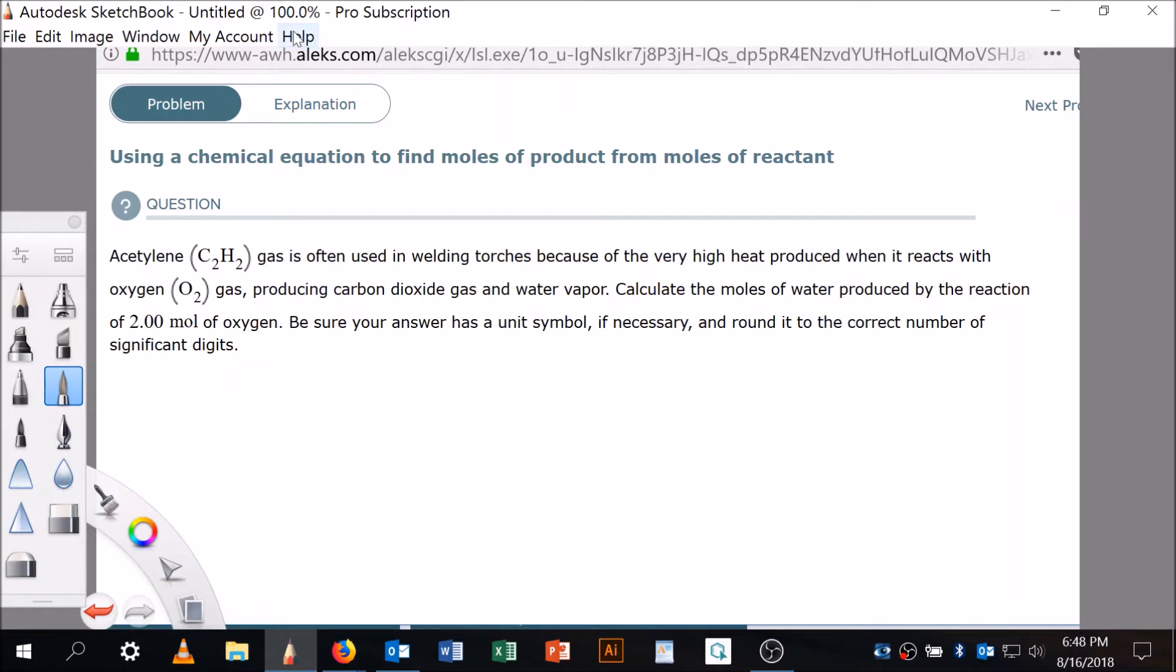So first of all, acetylene gas is often used in welding torches because of the very high heat produced when it reacts with oxygen (O2) gas, producing carbon dioxide and water vapor. All right, calculate the moles of water.